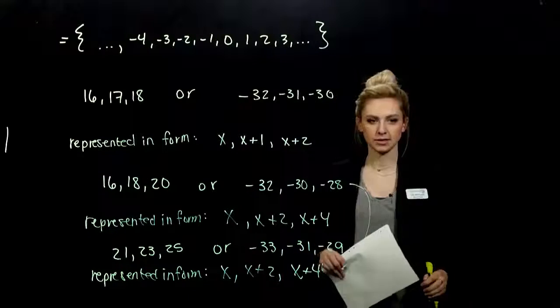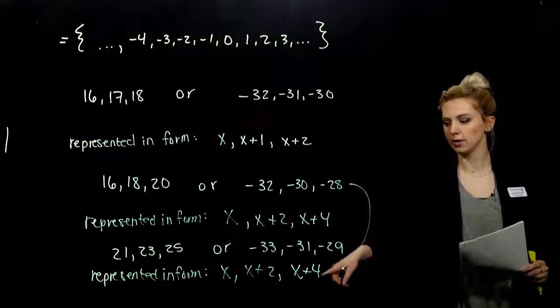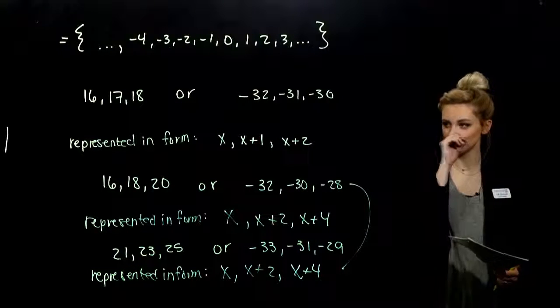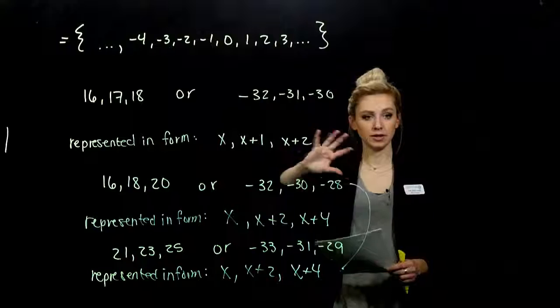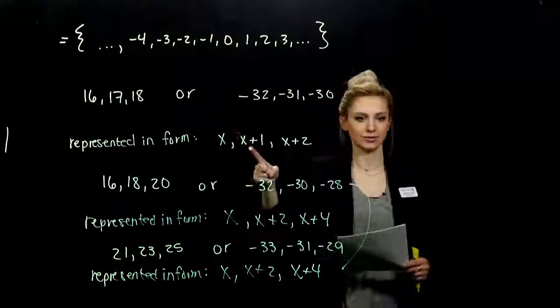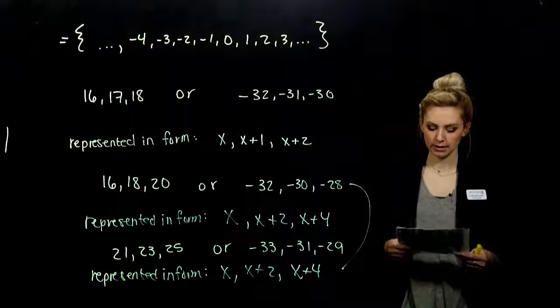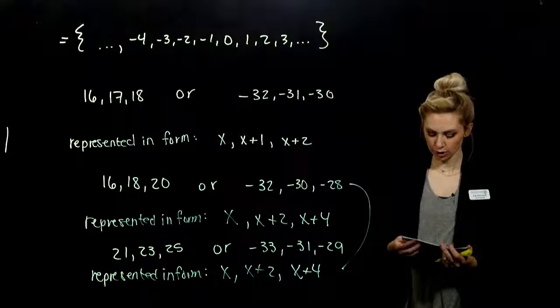So the even and the odd representations are exactly the same for those generic starting values. But consecutive integers just in general, one next to each other. So keep that in mind. You need to know that term consecutive. So turn the page.